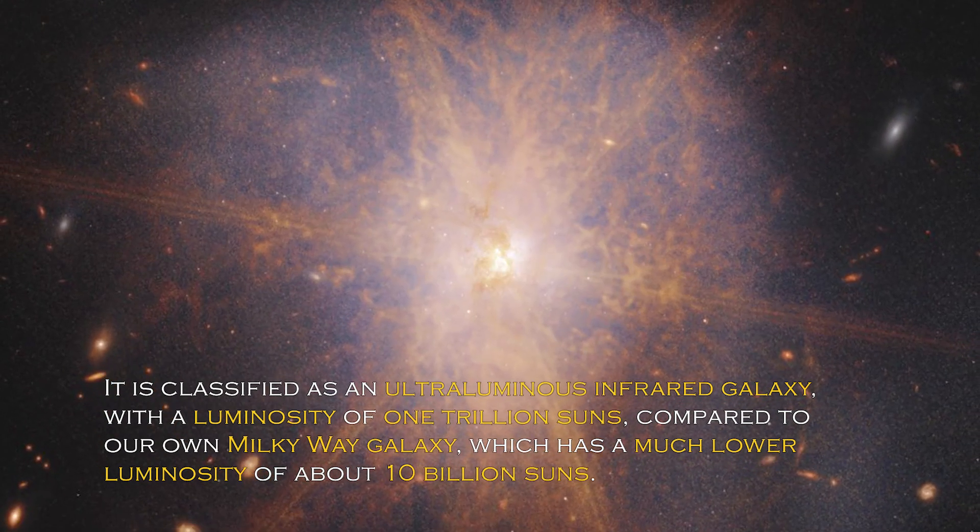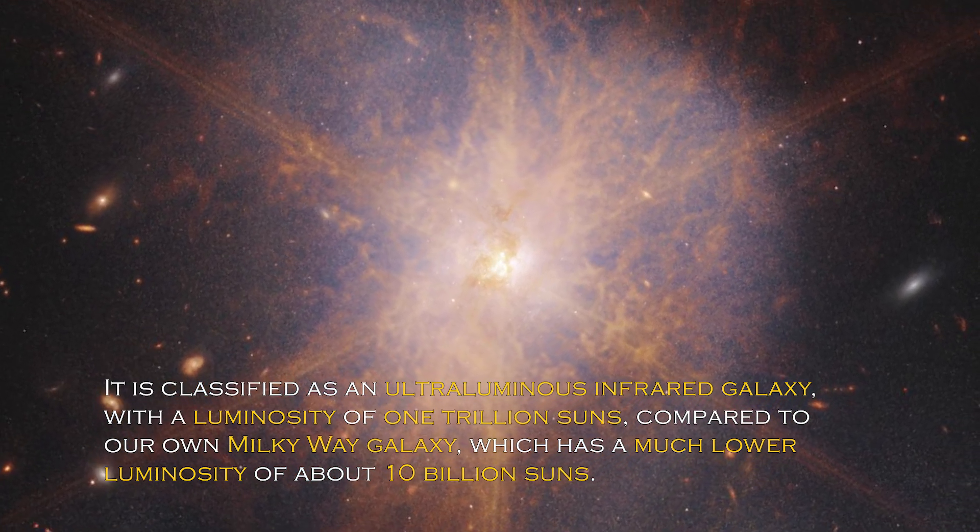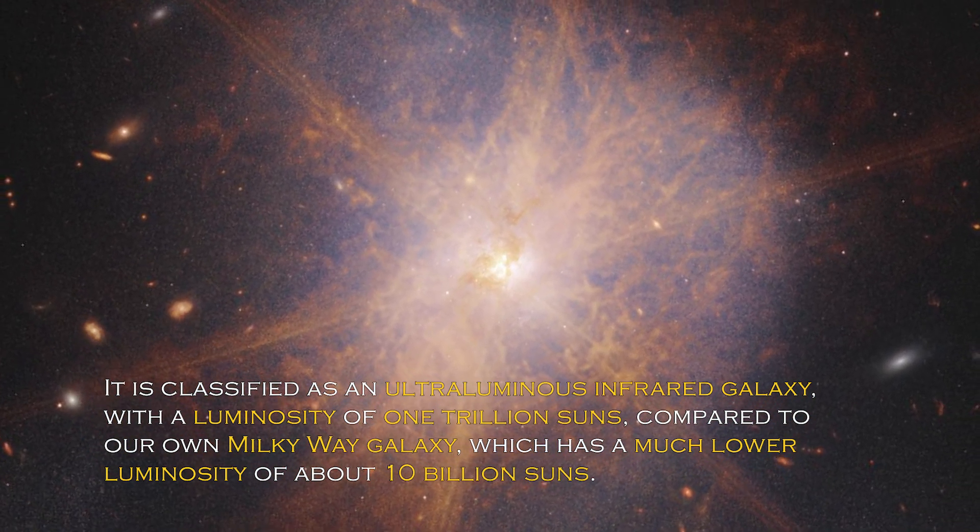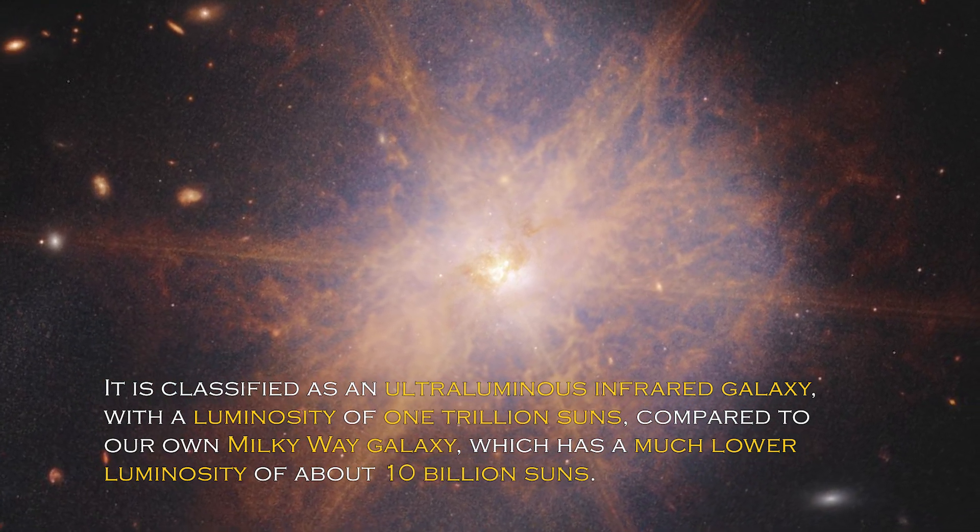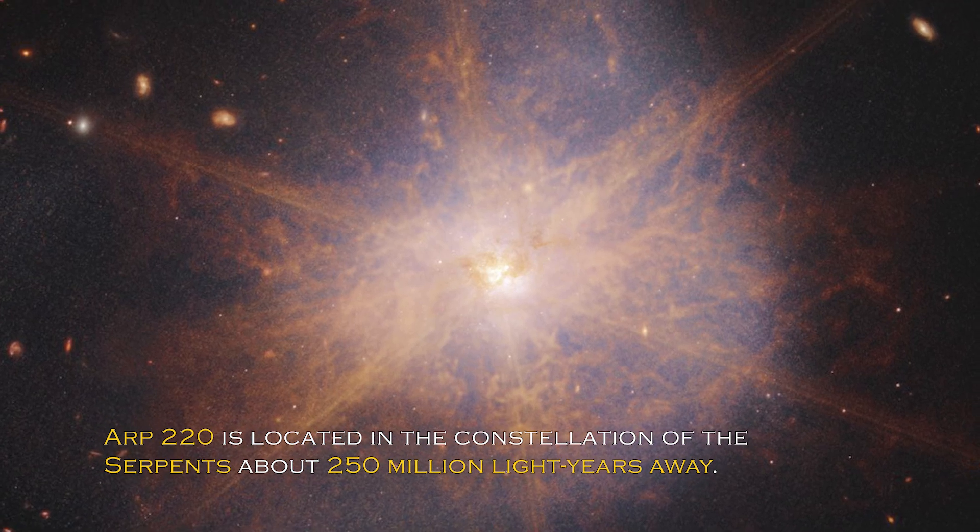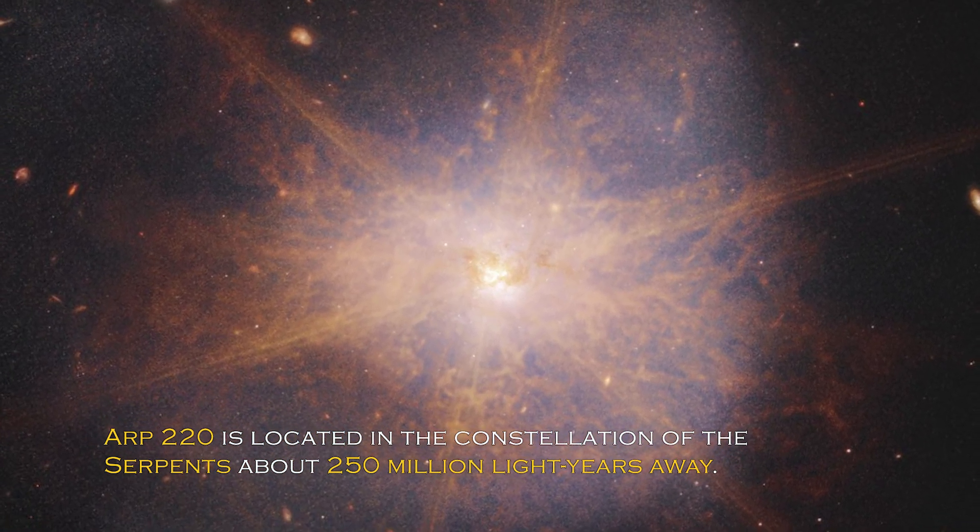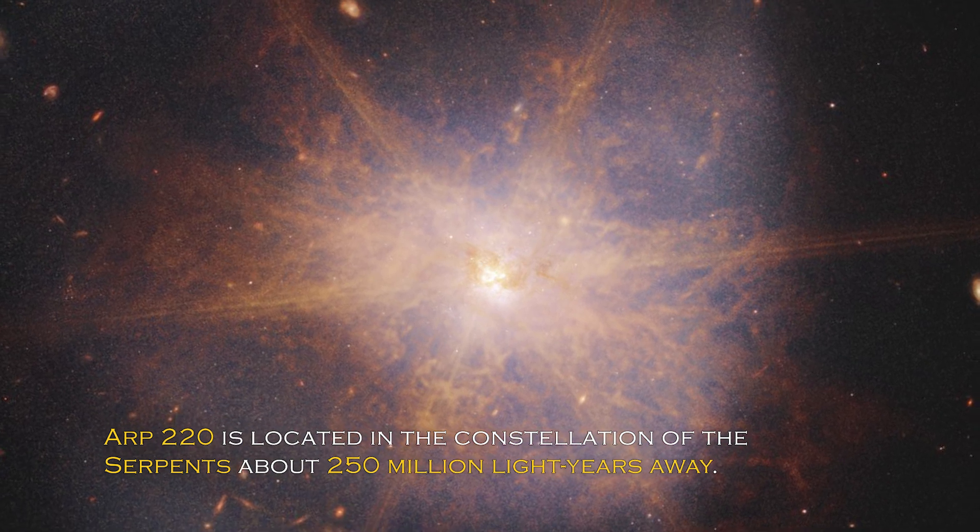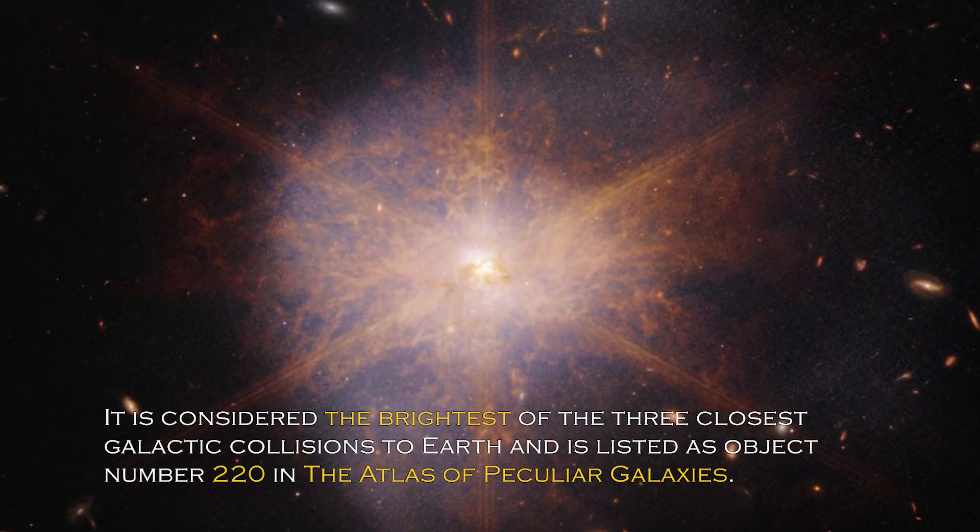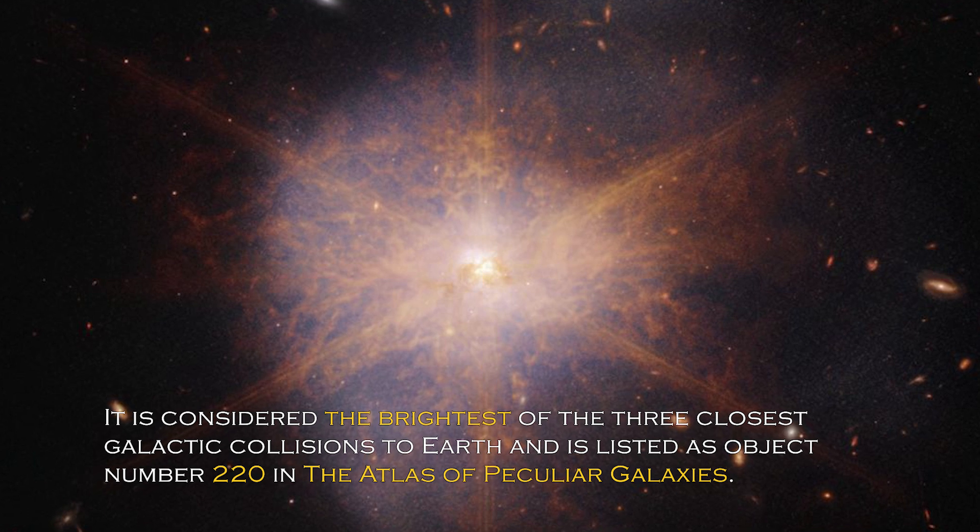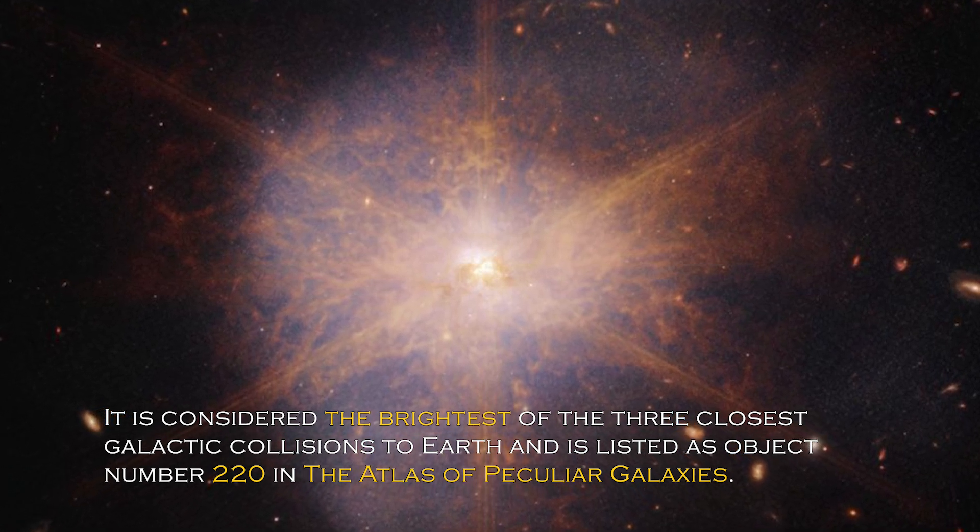It is classified as an ultra-luminous infrared galaxy, with a luminosity of one trillion suns compared to our own galaxy, the Milky Way, which has much lower luminosity of about 10 billion suns. ARP 220 is located in the constellation of Serpens, about 250 million light-years away. It is considered the brightest of the three closest galactic collisions to Earth, and it is listed as object number 220 in the Atlas of Peculiar Galaxies.